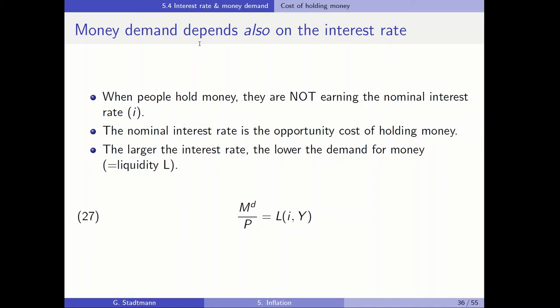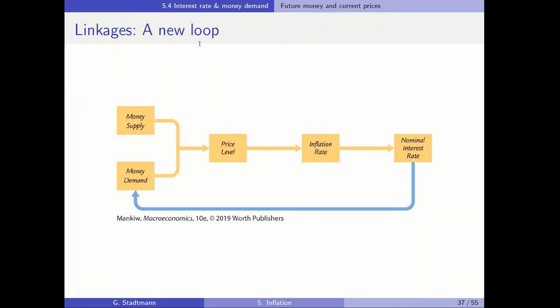We have an equation indicating that money demand depends on the liquidity function L. The two variables influencing money demand are the interest rate I and the GDP level Y. We are already familiar with the influence of GDP on money demand: K times Y. The new element here is the interest rate in the demand relationship. When money demand also depends on the nominal interest rate, the linkage between money supply and the inflation rate gains a new feedback loop.